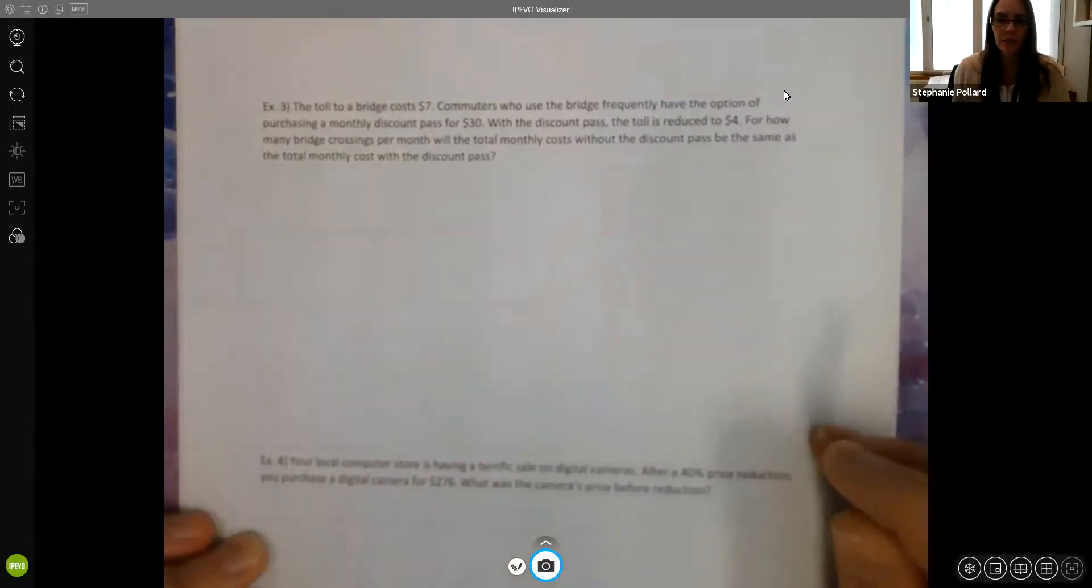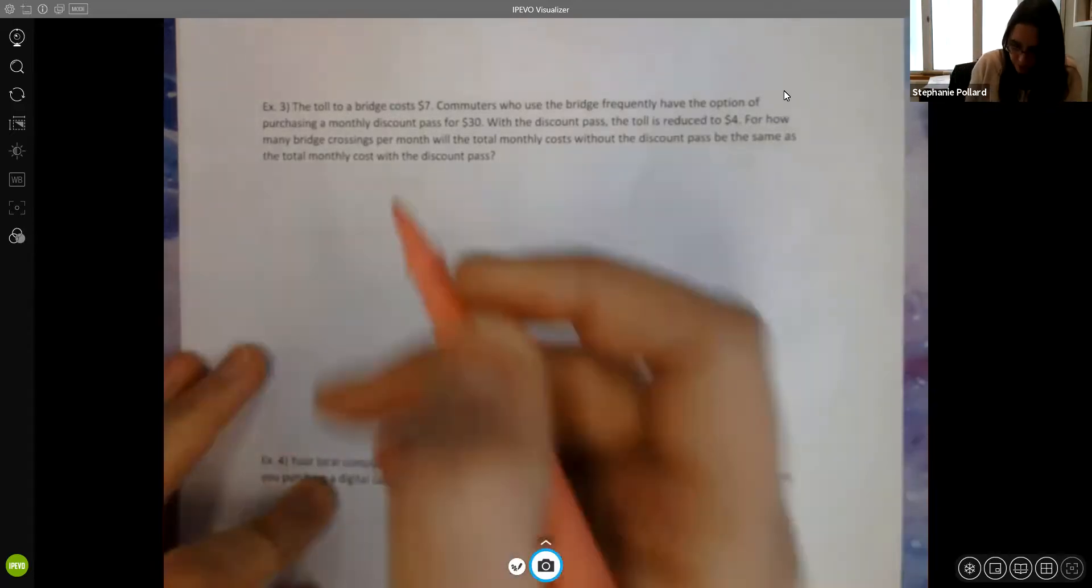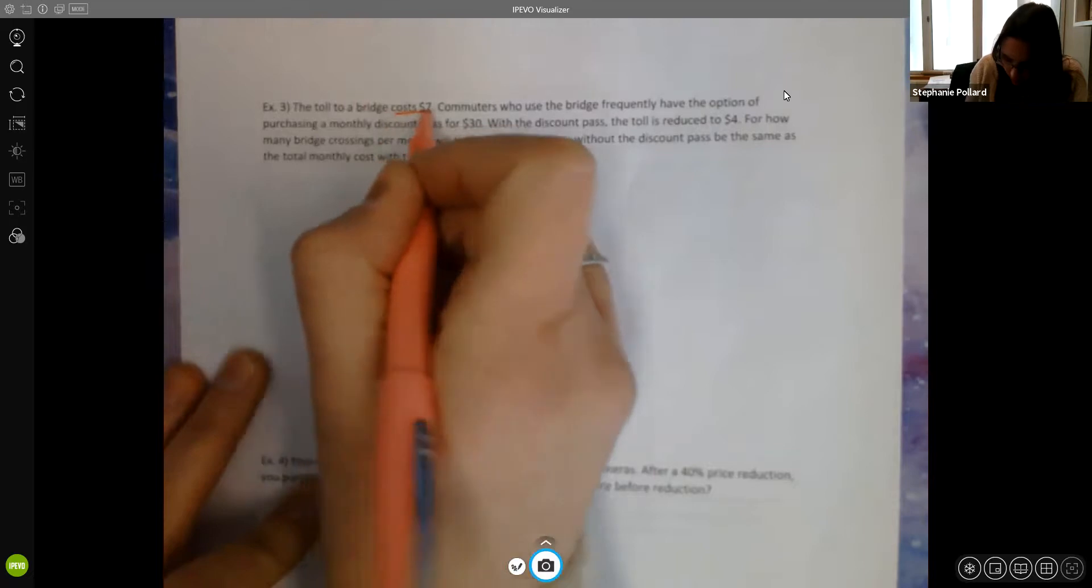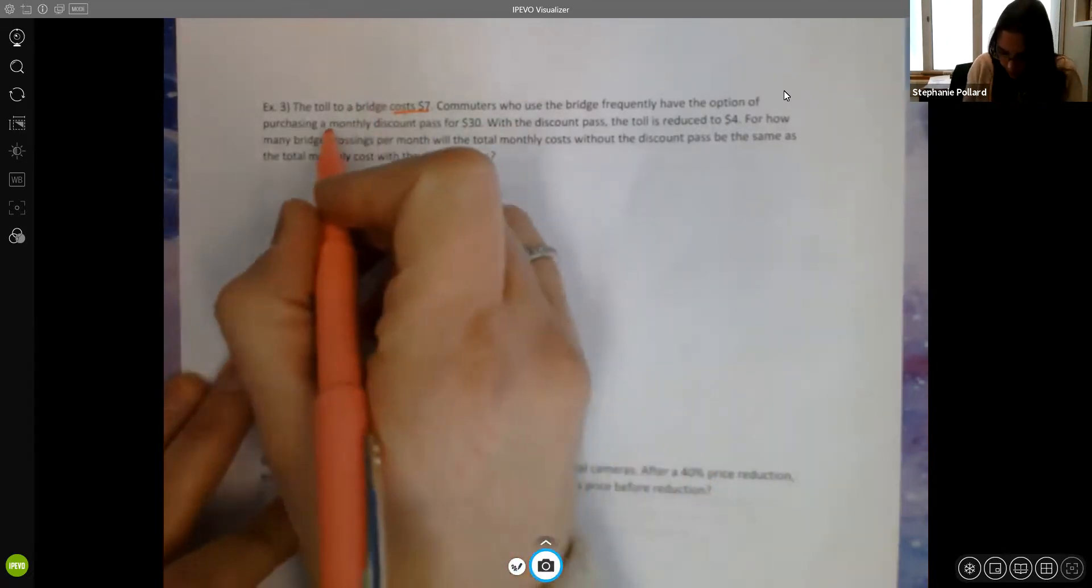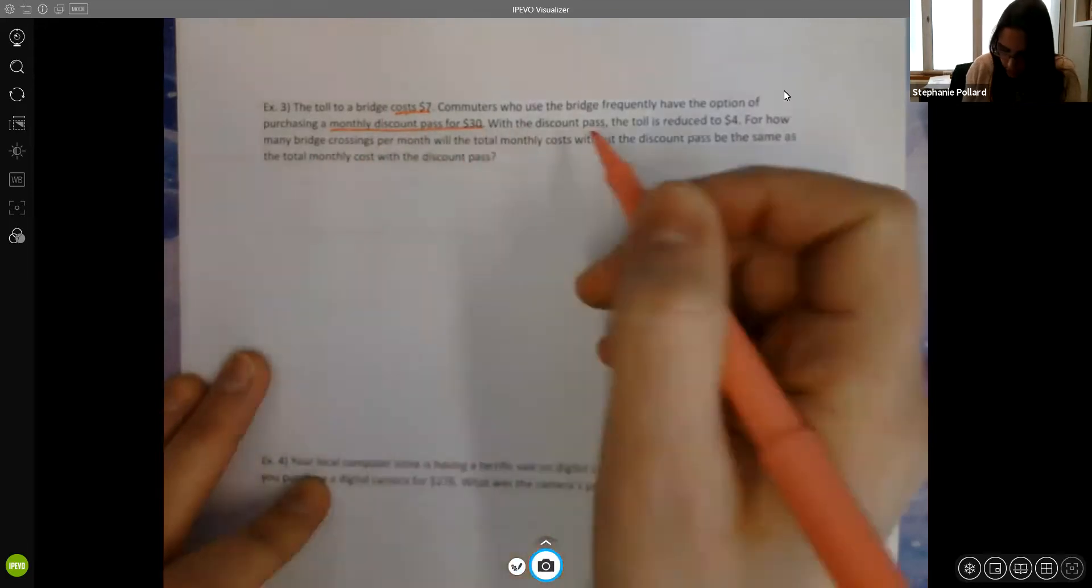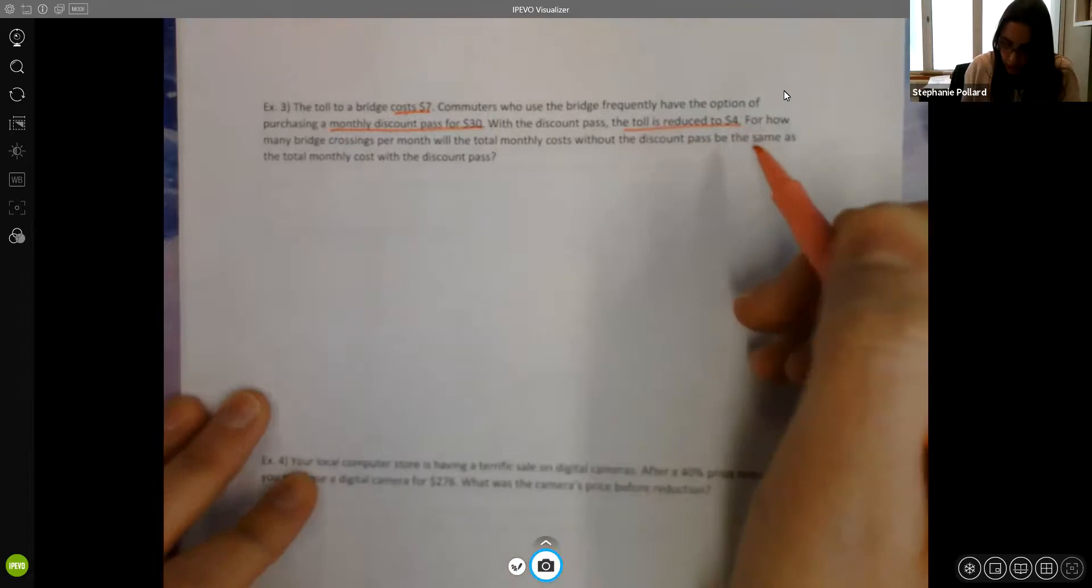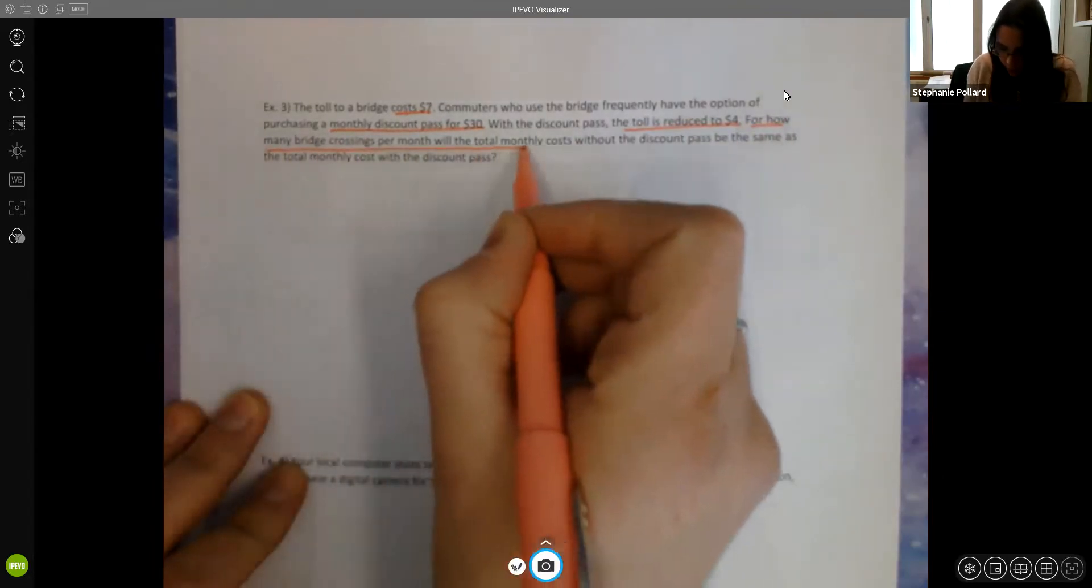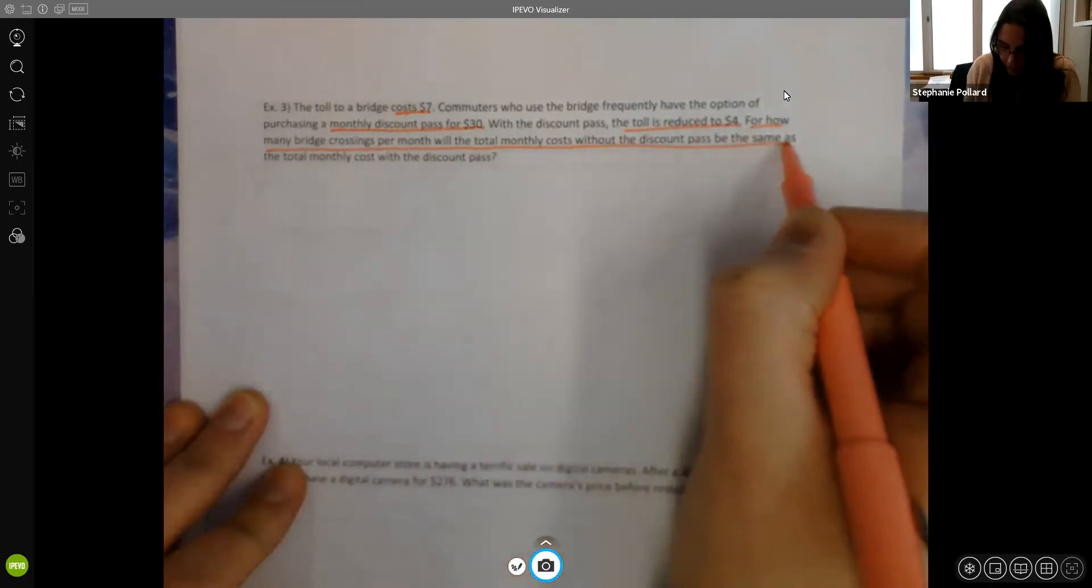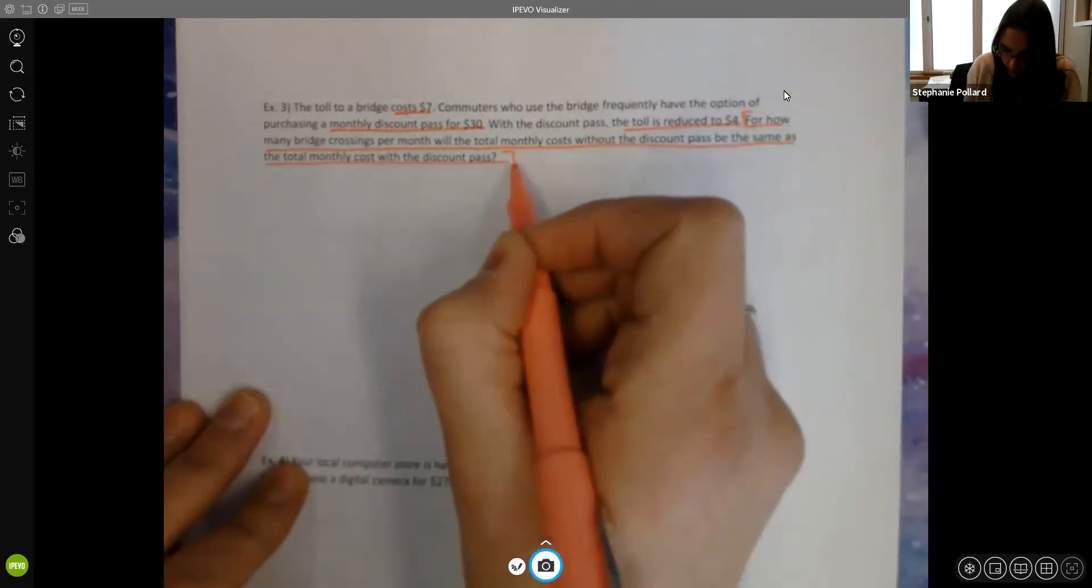All right, let's look at a few more examples. It says the toll to a bridge costs $7. Commuters who use the bridge frequently have the option of purchasing a monthly discount pass for $30 and with the pass the toll is reduced to $4. For how many bridge crossings per month will the total monthly cost without the pass be the same as the cost with the pass? So here's our question.